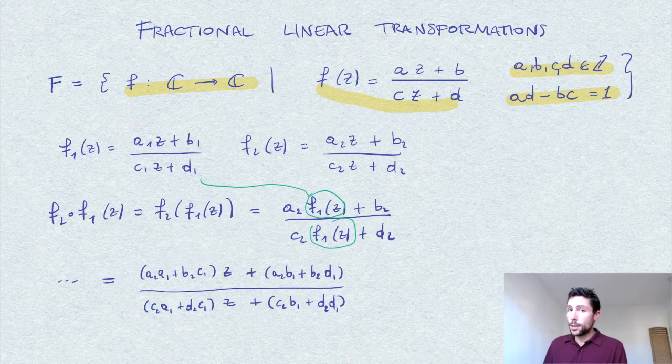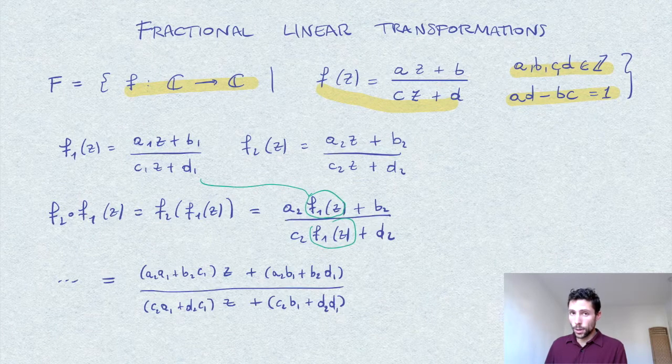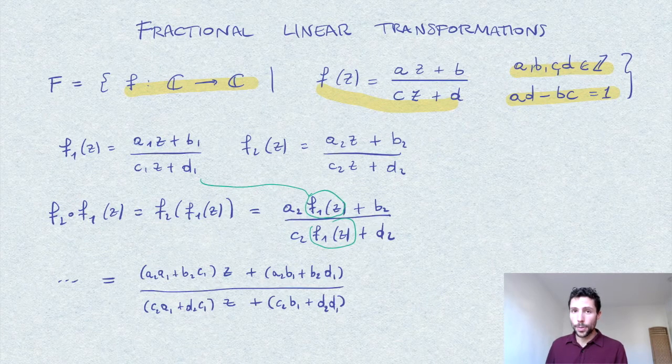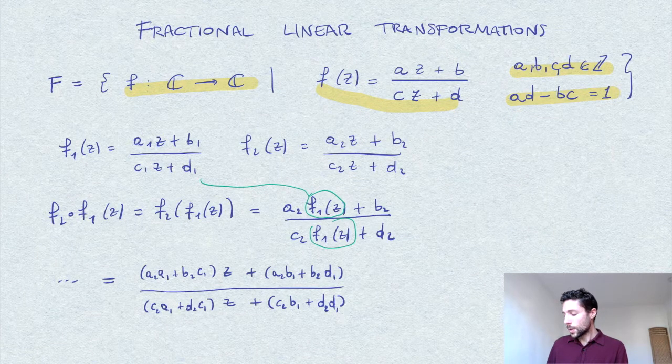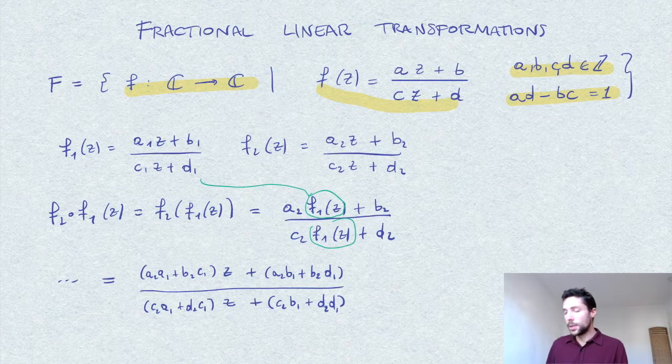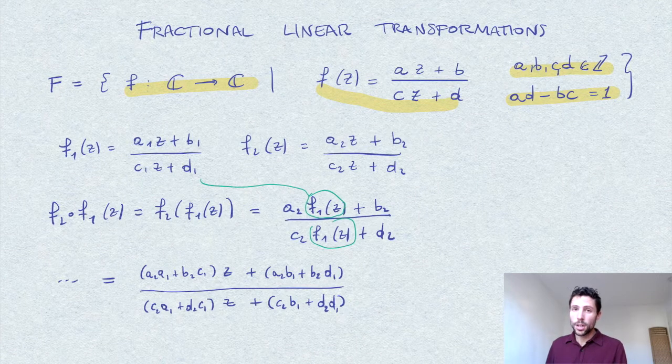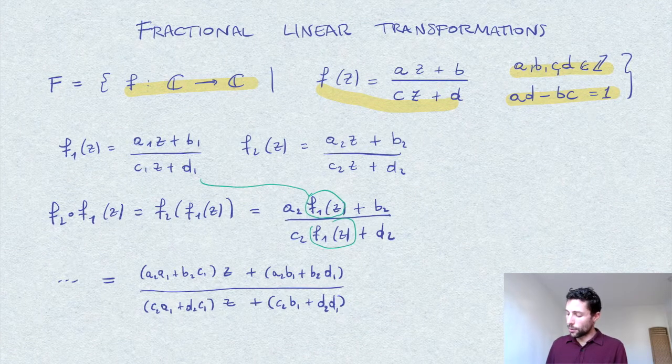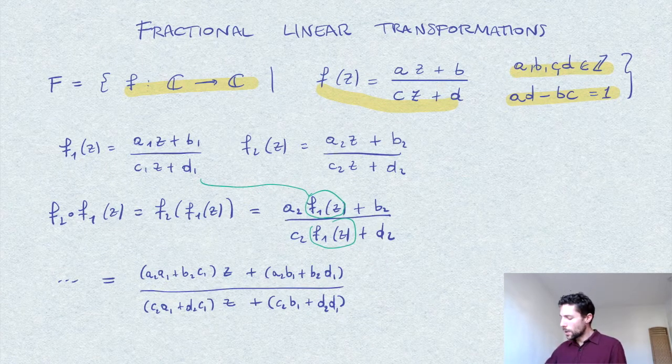We could proceed to show that this is a group by verifying all of the axioms. A very direct way to approach this exercise. However, this might be a bit painful because the computations are tricky. To verify associativity might take a bit long.